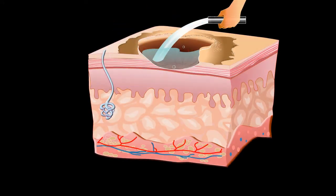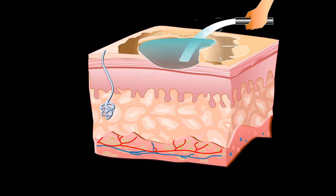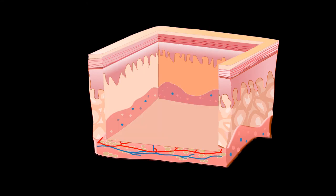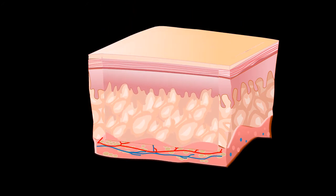Skin taken from an identical twin can be used for a graft, but skin from another person or an animal is soon rejected by the recipient body.